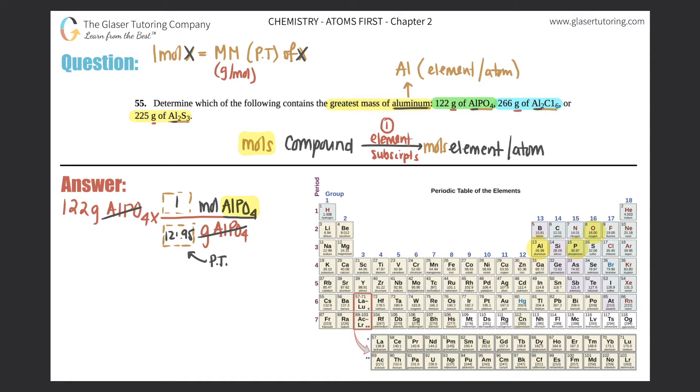And you get 121.95 grams of aluminum phosphate. This will cancel, so 122 divided by that molar mass. We need three sig figs because we started off at three, so this would just be 1.00. So we basically get 1.00 moles of AlPO4. That's how many moles are here.